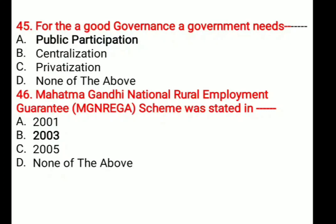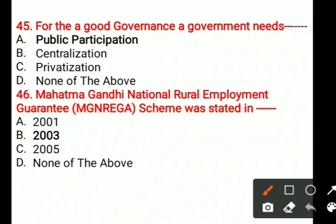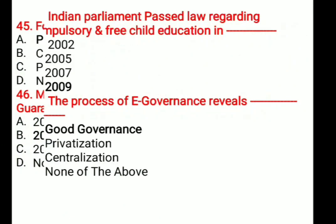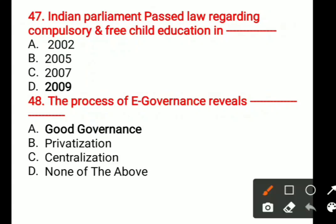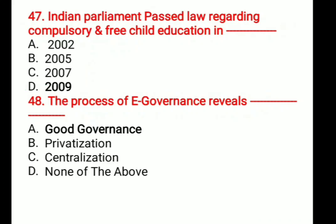Question number 45: For good governance, a government needs blank. Options are: A. Public participation, B. Centralization, C. Privatization, D. None of the above. The correct answer is public participation. Question number 46: Mahatma Gandhi National Rural Employment Guarantee — MGNREGA scheme was started in which year? Options: 2001, 2003, 2005, None of the above. The correct answer given is 2003. Question number 47: Indian Parliament passed the law regarding compulsory and free child education in which year? Options: 2002, 2005, 2007, 2009. The correct answer is 2009.